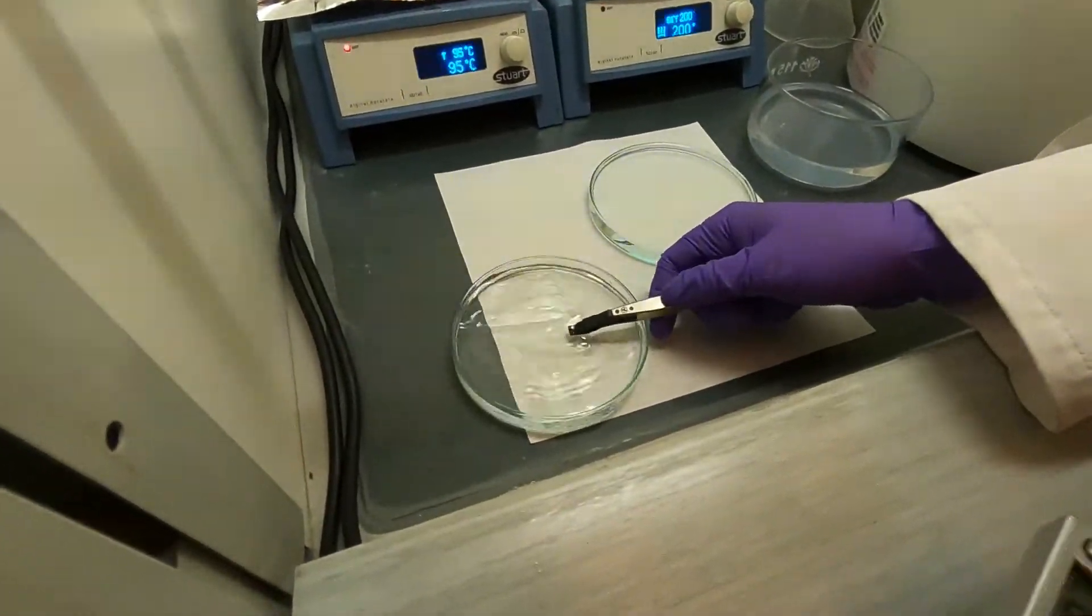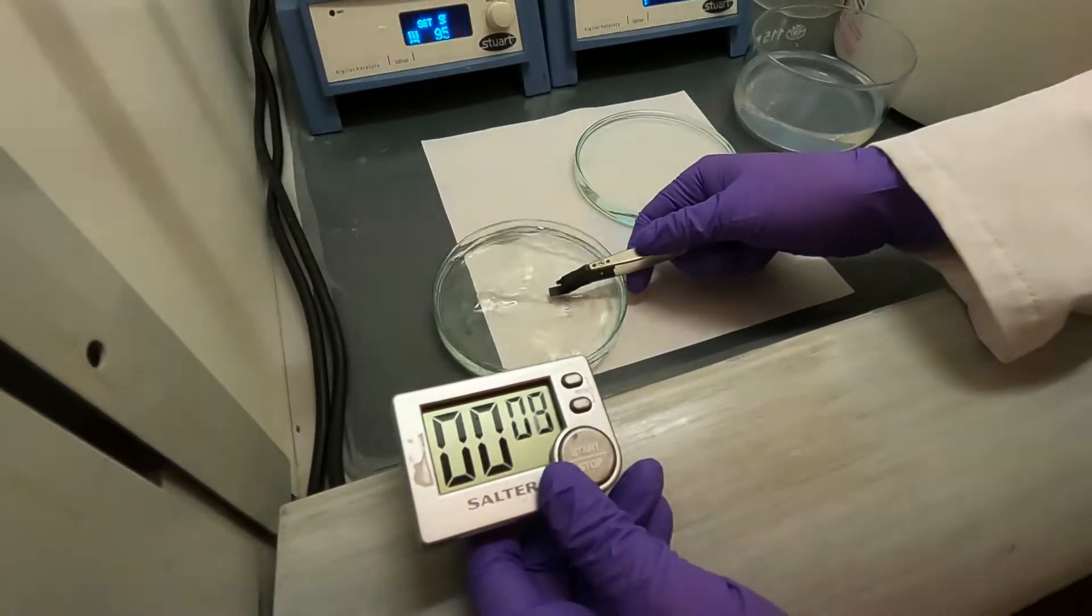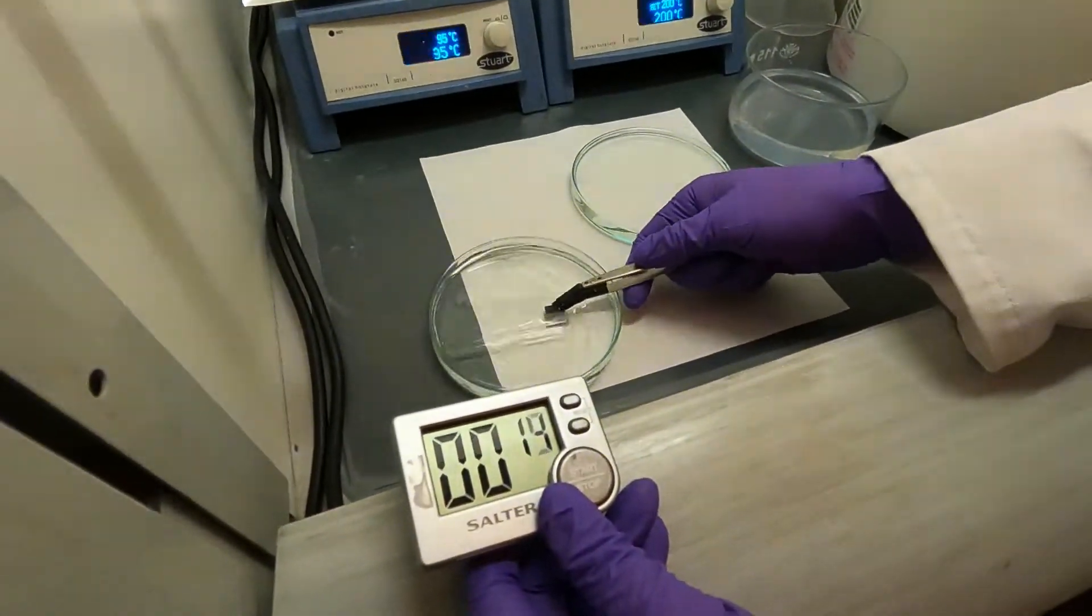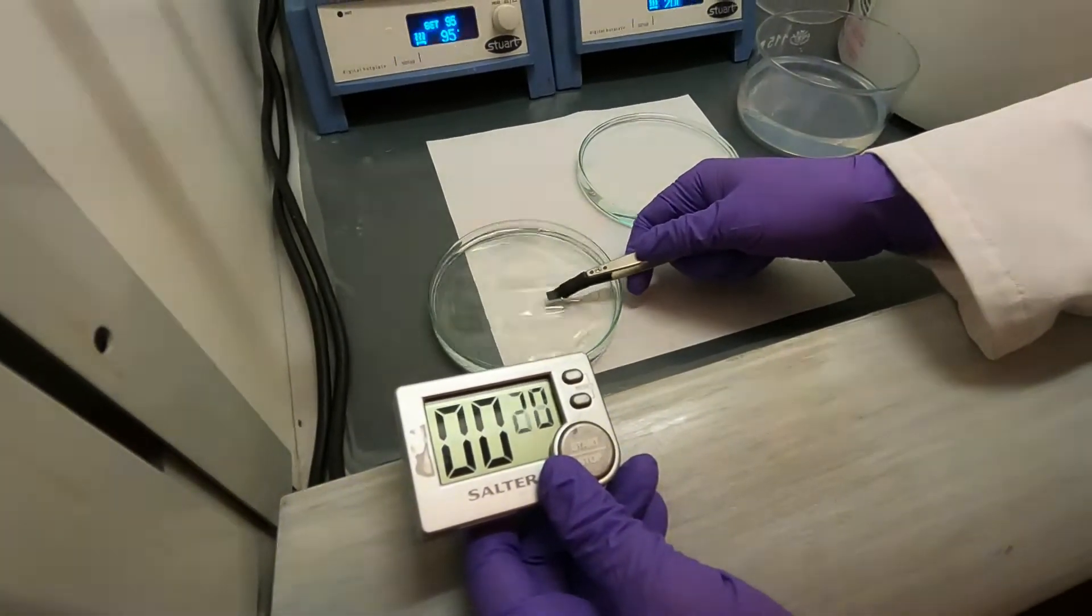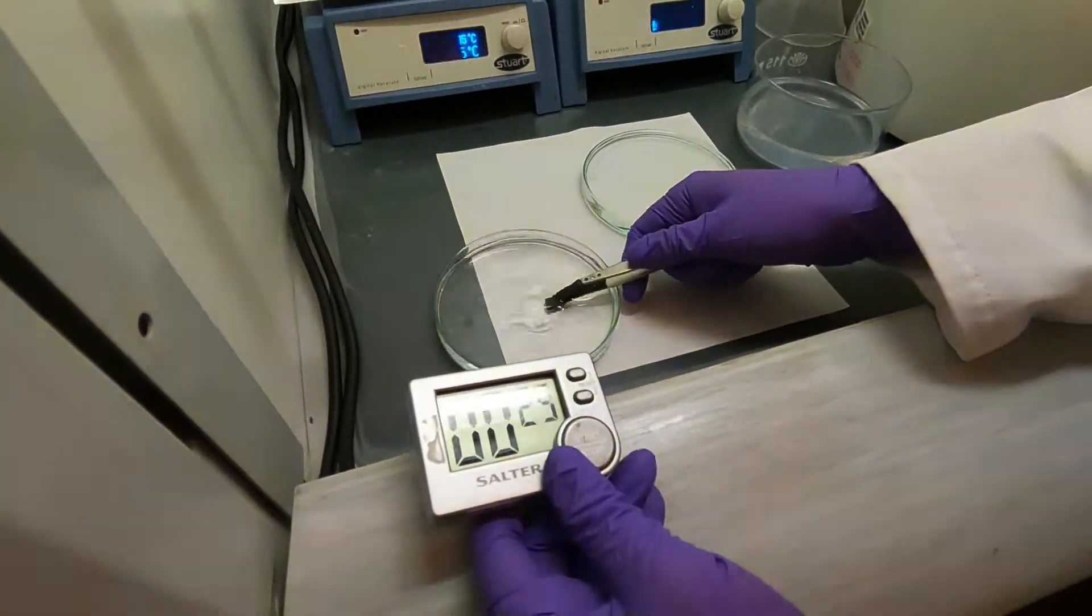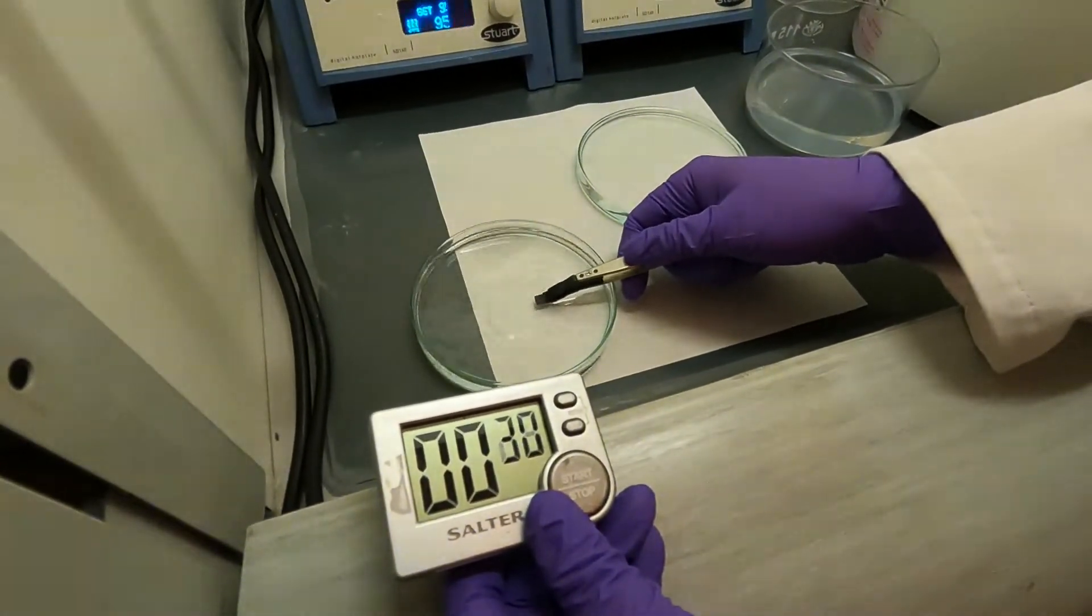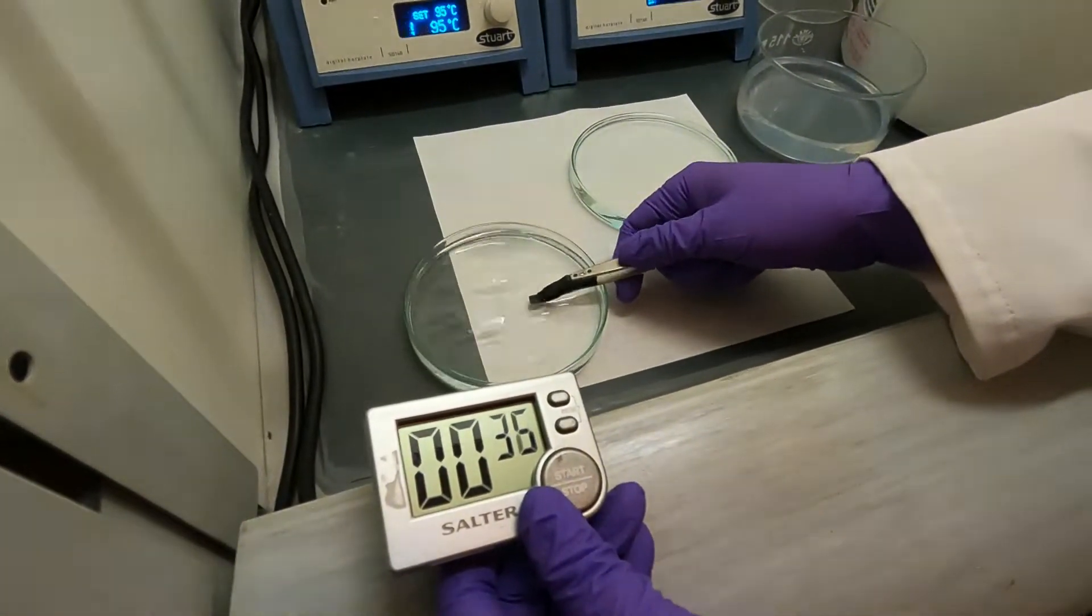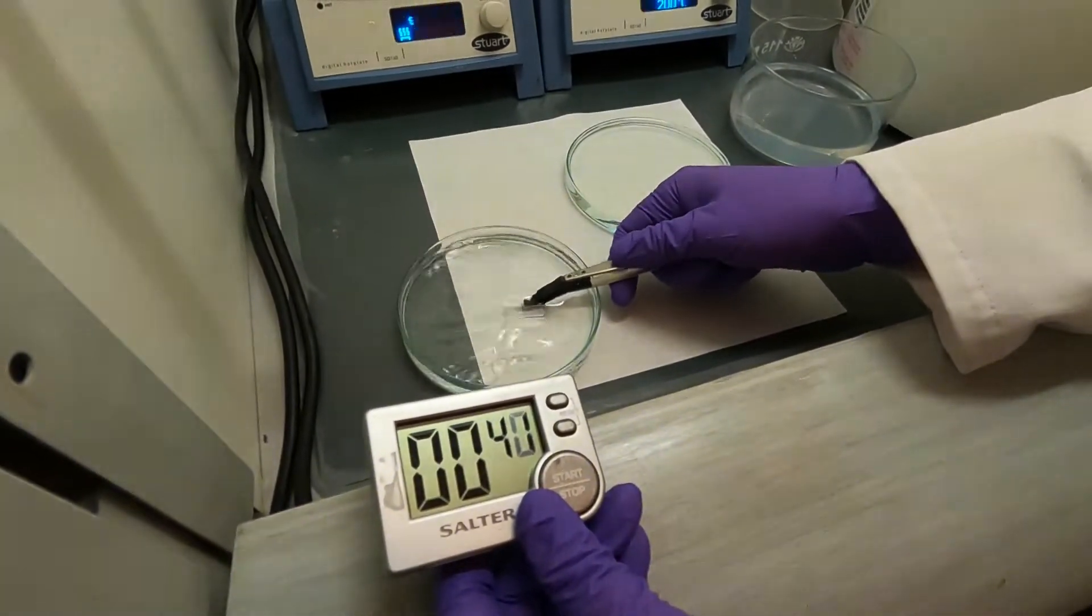I'm now starting the timer. All you want to do is gently shake your sample. I tend to keep a loose grip on the sample with the tweezers to avoid dropping it inside the petri dish. I'm expecting one minute thirty to two minutes is the right amount of development, but I'm going to extract it at around one minute and go straight into the isopropanol to show you what it looks like when the sample is underdeveloped.